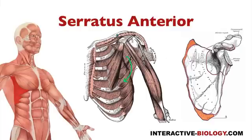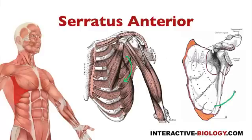Depending on how it contracts, it can move this portion even more and help with upward rotation. I can show that a little better here. So upward rotation of the scapula is also accomplished by serratus anterior.